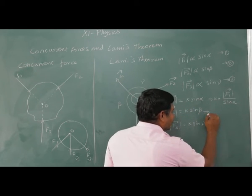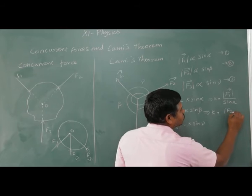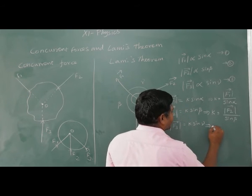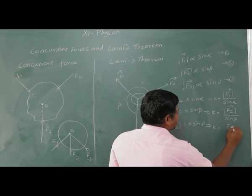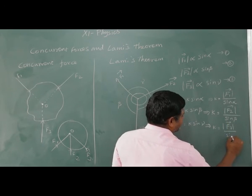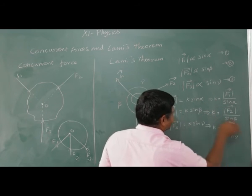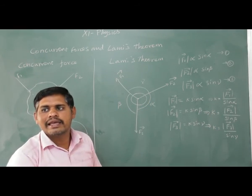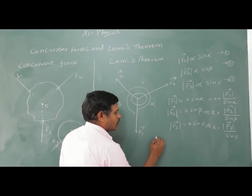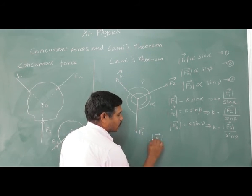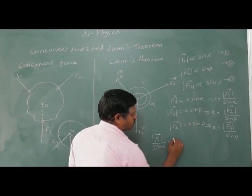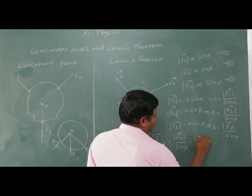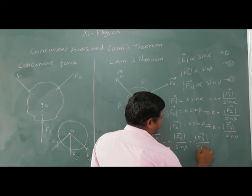Dividing through by the sines: the modulus of F1 vector divided by sine alpha equals the modulus of F2 vector divided by sine beta equals the modulus of F3 vector divided by sine gamma. Since K is constant, these three ratios are all equal to each other.